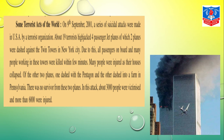About 19 terrorists hijacked four passenger jet planes, of which two planes were dashed against the twin towers in New York City. In the picture you can see one plane has already crashed and the flames are visible, and the second plane is about to crash. Their main purpose was to crash so that the full building collapsed. Due to all this, all passengers on board and many people working in those towers were killed within a few minutes.